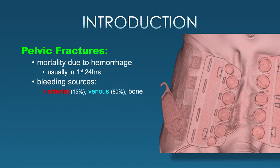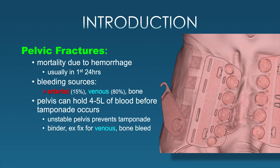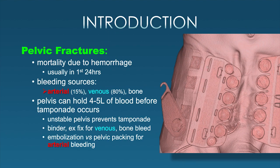Mortality is most commonly related to hemorrhage, which typically happens within the first 24 hours. Bleeding sources can be arterial in about 15 percent, the majority being venous, and a small percent being osseous bleeding. The pelvis can hold four to five liters of blood before tamponade occurs spontaneously, and the unstable pelvis is unable to prevent tamponade because you can keep expanding the size of the pelvis. This is why we put patients in a pelvic binder. Those are helpful for venous and bone bleeds, but arterial bleeding requires embolization or pelvic packing.